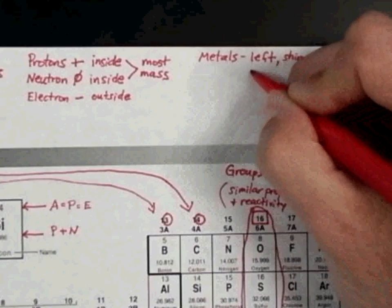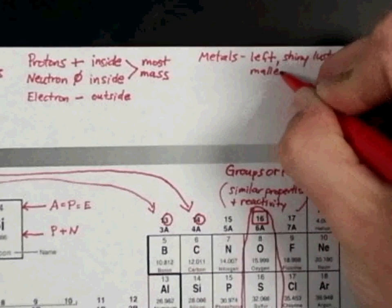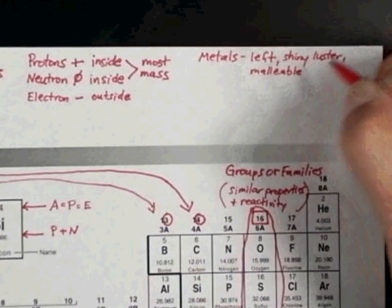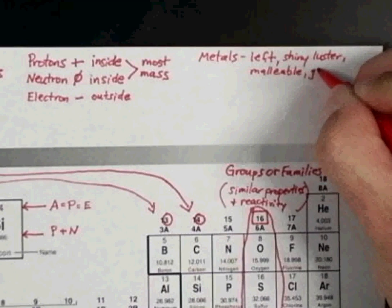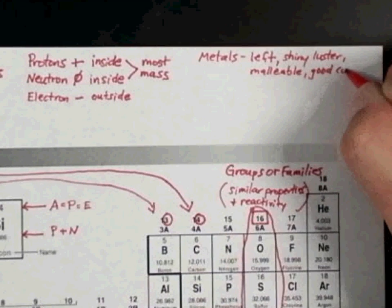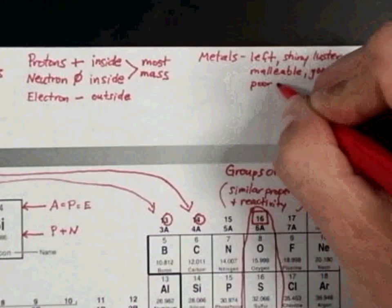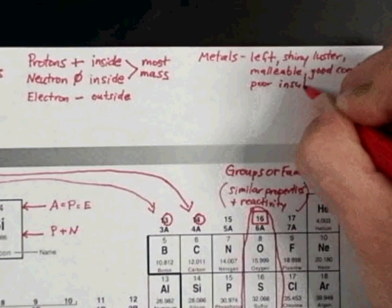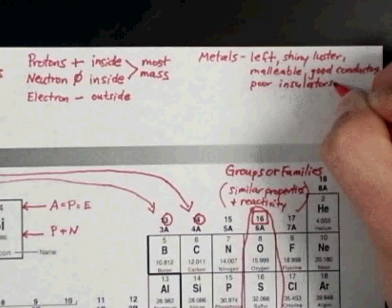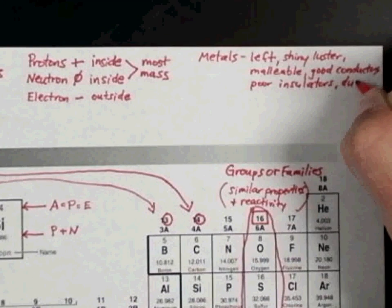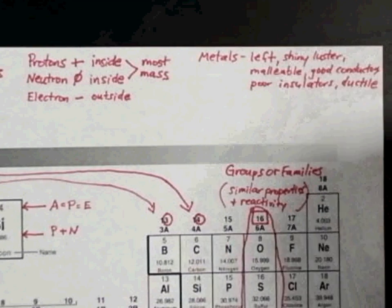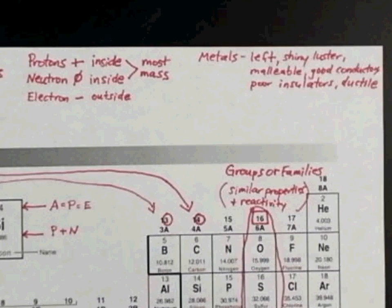And then they are malleable, which means they can be pounded into sheets. They are also good conductors. And they are poor insulators. You could also mention that they are ductile as well, which means they can be pulled into a wire, like you'll see in copper wire in all your electricity around your house or your school.